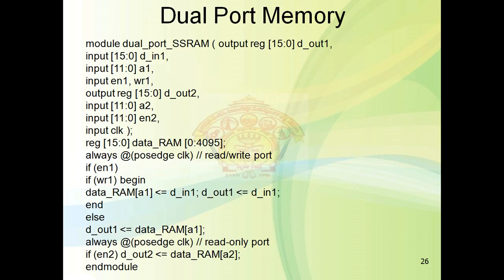To write the Verilog program for the dual port memory, the module name is dual_port_sram. We define inputs and outputs for port 1 and port 2. For port 1, the output register is [15:0] dout1. Inputs for port 1 are: [15:0] data input din1, [11:0] address A1, input enable en1, and write signal write.